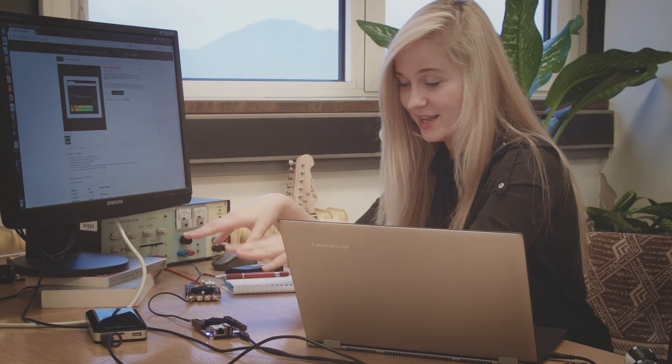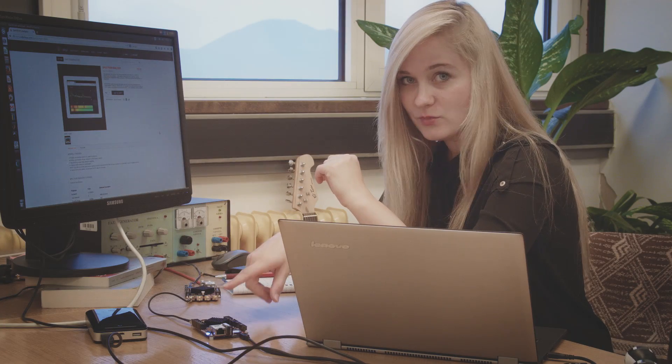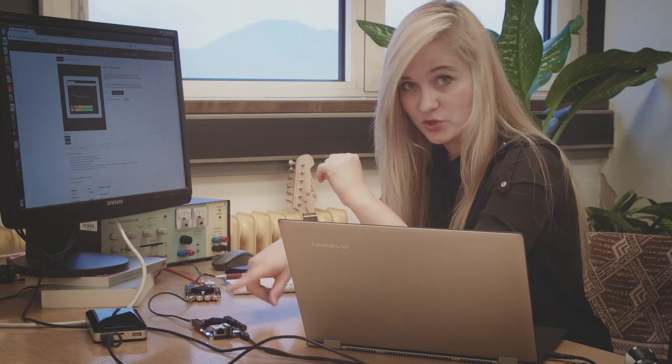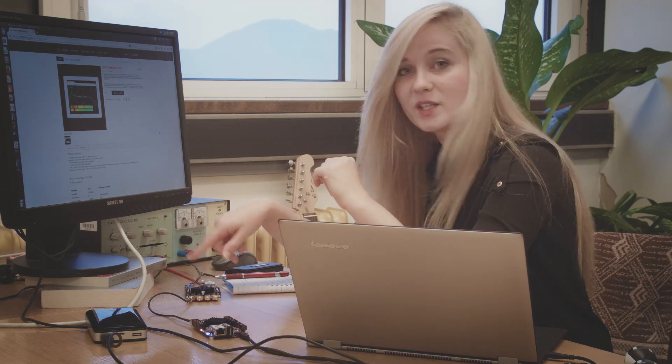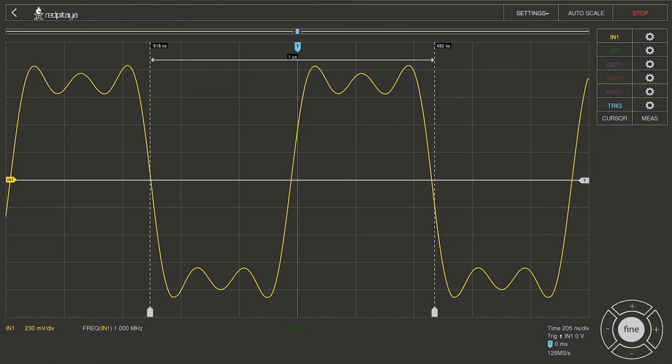Here we have two red pitayas. With first one, I am generating a complex voltage signal which is observed with another one. Let's check what we are generating with an oscilloscope. This is our voltage signal.